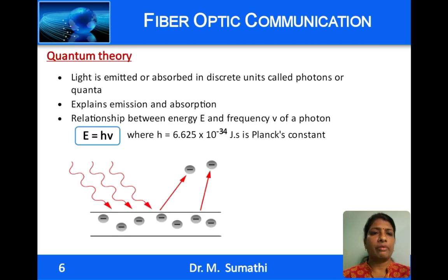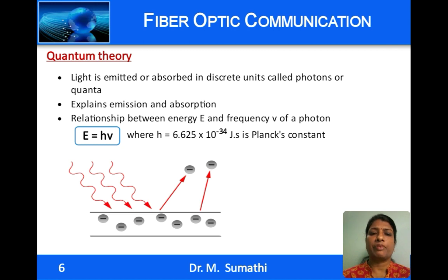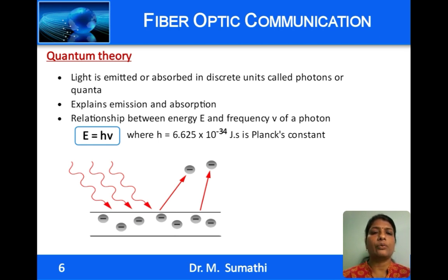But neither wave theory nor ray theory could explain black body radiation — that is, emission of light spectrum from a hot body. So quantum theory was used to explain this. Quantum theory considers light to be packets or discrete units of energy called photons, and it explains the interaction between material and photons.